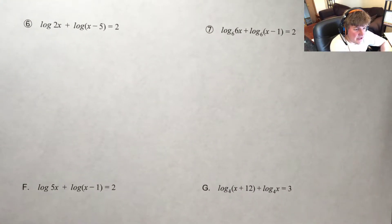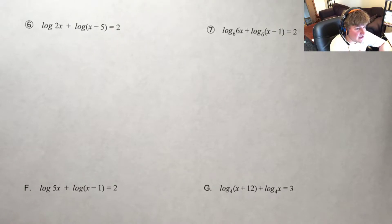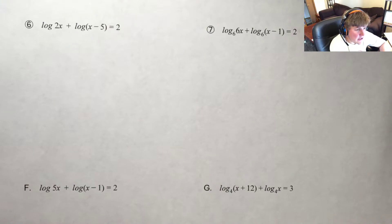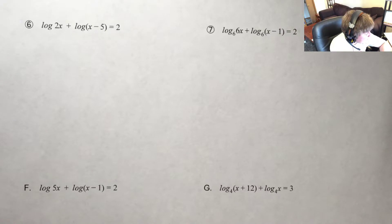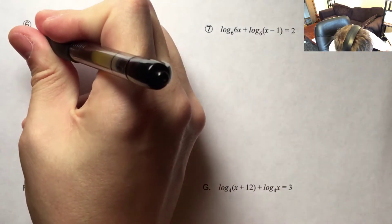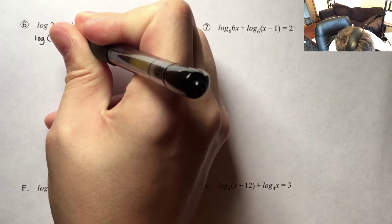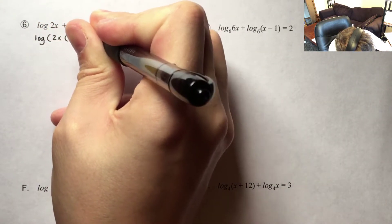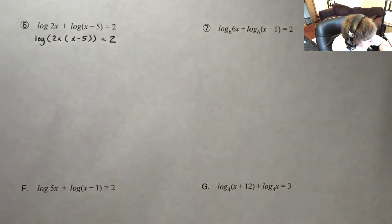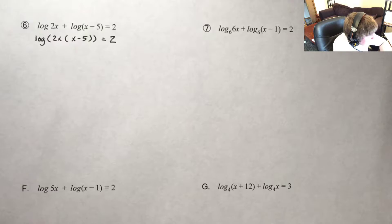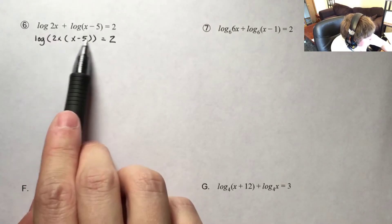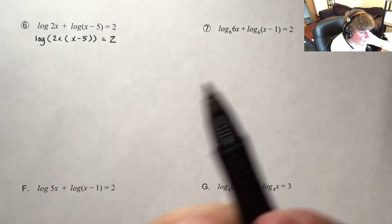As I look at problem 6, I have log base 10 — and I know it's base 10 because there's no base written there, so it's implied. Adding to it, log base 10 of x minus 5, and that whole thing is equal to 2. So let's go ahead and use our product property just to condense this down. I have log base 10 of 2x times x minus 5, and that's equal to 2. Now I want to get rid of this logarithm so I can just have my variables and reduce it down into a form that will help me solve.